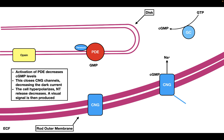When neurotransmitter release decreases, this causes a visual signal to be produced. Now the CNG channels are basically cation non-selective channels, so they let in a number of different cations. In addition to sodium, they also allow in calcium. Calcium is going to act as a negative feedback mechanism. The reason why is because calcium is actually going to inhibit guanylate cyclase, therefore decreasing the amount of cyclic GMP. It's also going to stimulate phosphodiesterase, where it also acts to decrease the levels of cyclic GMP.